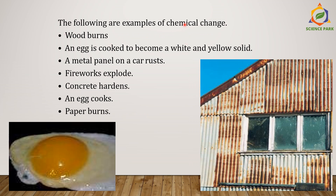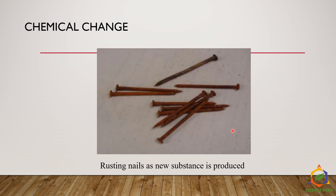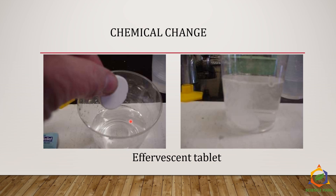The following are classic examples of chemical changes: burning of wood, cooking an egg so it becomes a white and yellow solid, metal panels on a car rusting, fireworks exploding, concrete hardening, paper burning, and rusting of iron. Have you ever dropped an aspirin tablet in water? It gives effervescence — thousands of bubbles come out of the tablet. This property is called effervescence, and it is a chemical change.